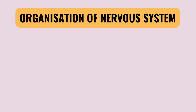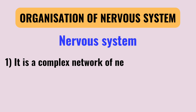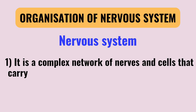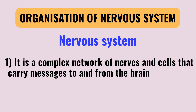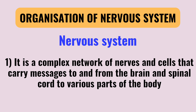First, let me explain about the nervous system. It is a complex network of nerves and cells that carry messages to and from the brain and spinal cord to various body parts. The nervous system generates different signals in the body.